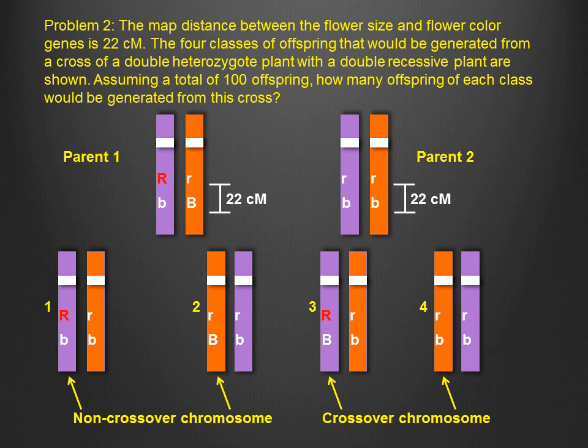Conversely, the class 3 and 4 offspring inherited crossover chromosomes and are therefore recombinant offspring.